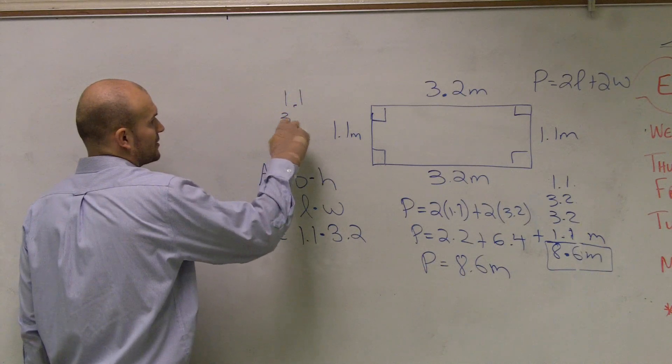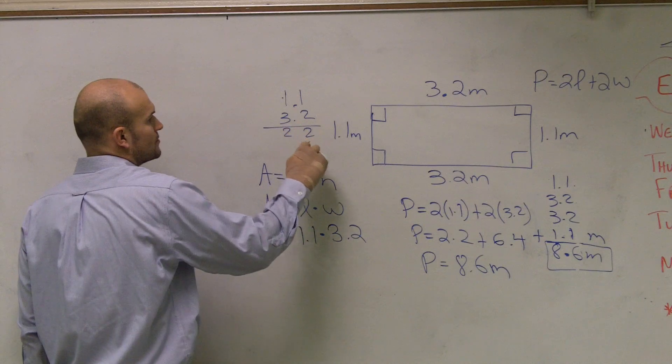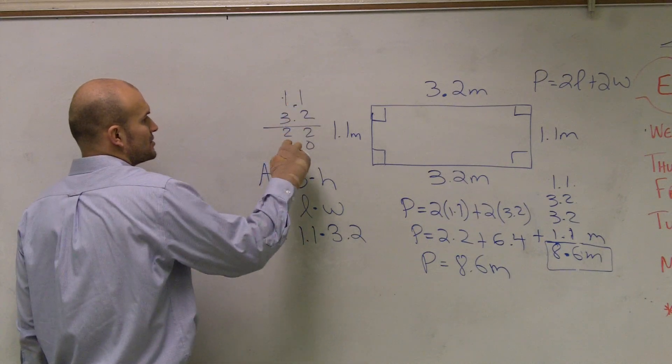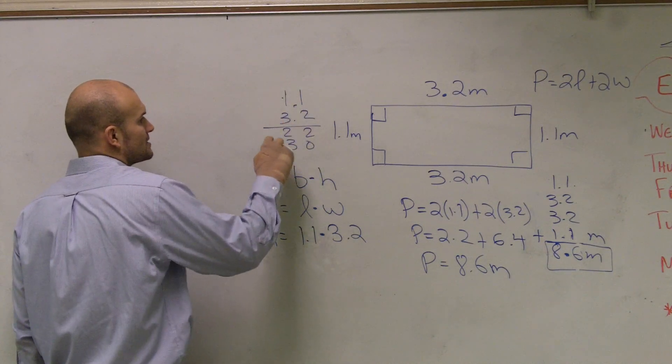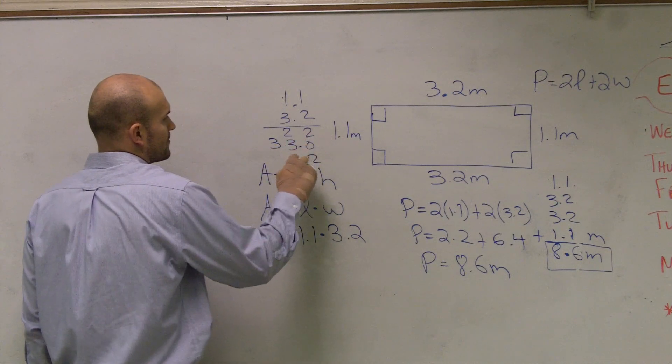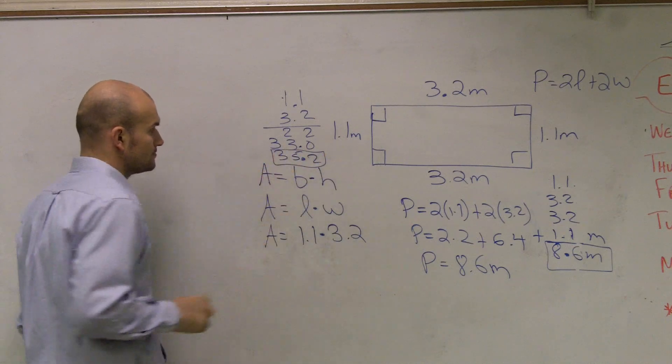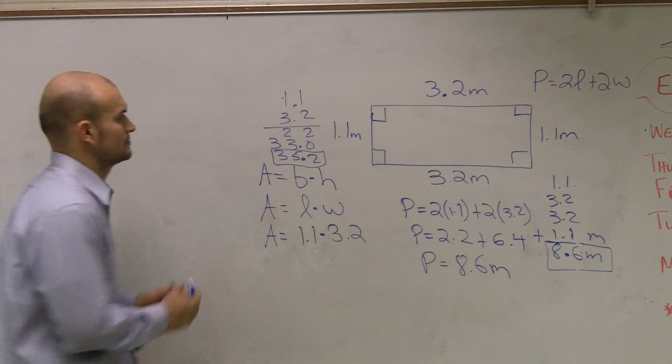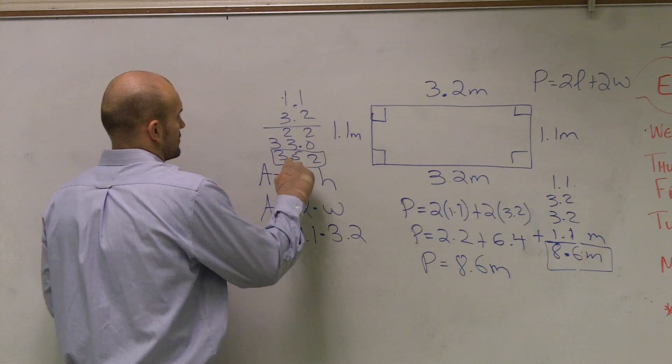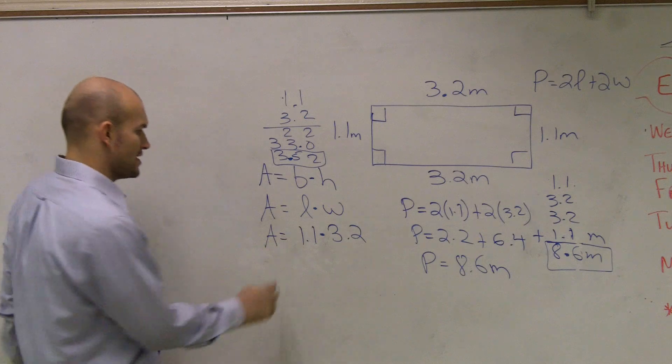2 times 1 is 2, 2 times 1 is 2, 0, 3 times 2 is 3, 3 times 1 is 3. Add them both up. 2, 5, 3. All right. There it is. 3.52 is going to be my area.